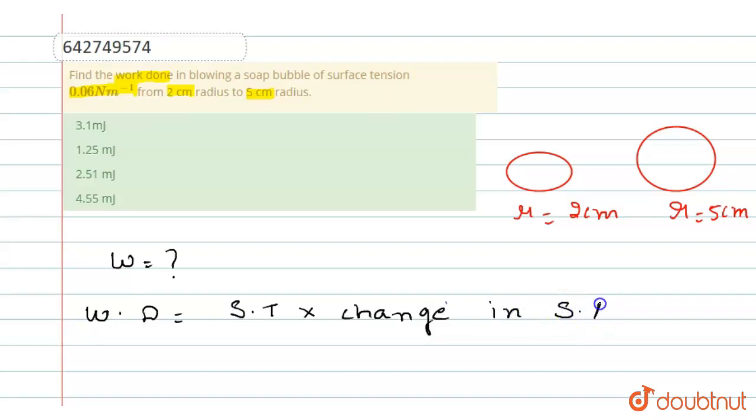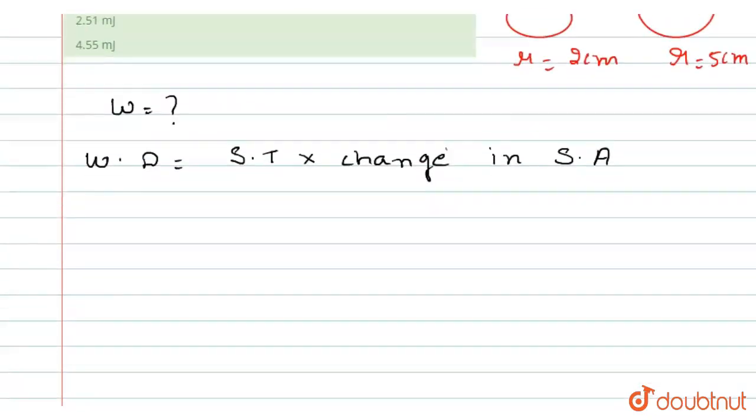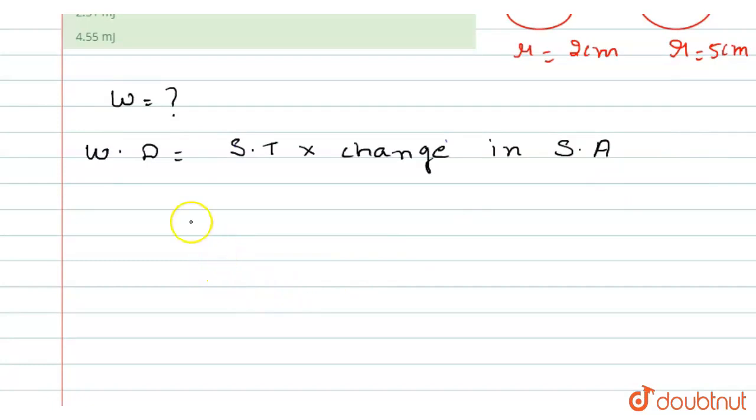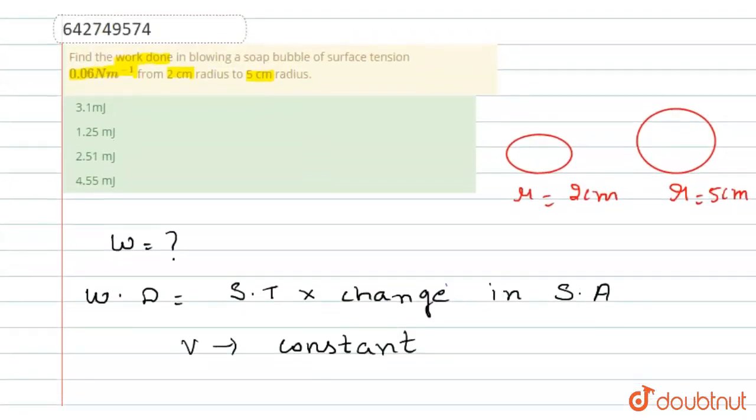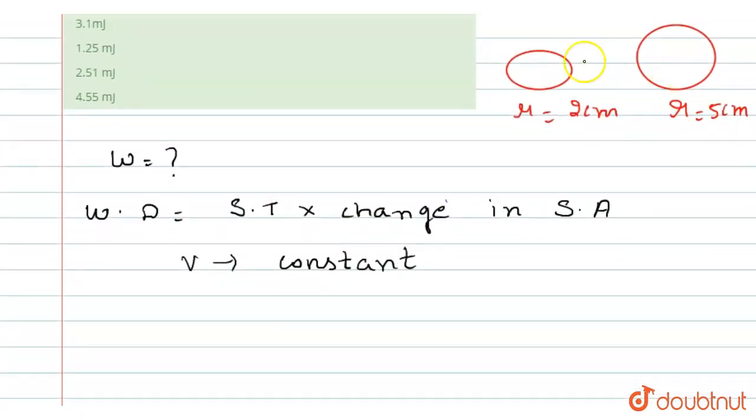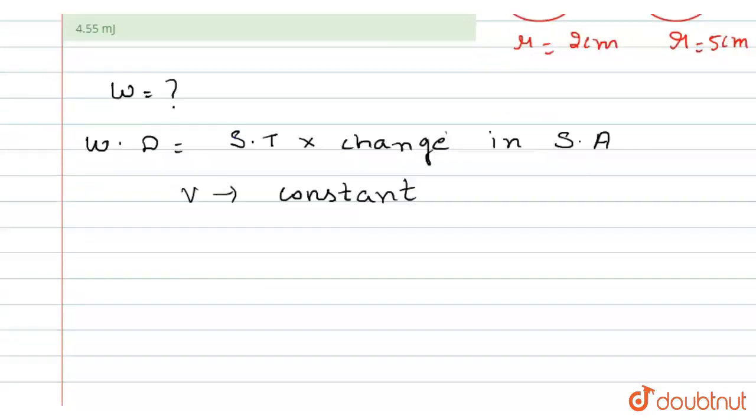In this question volume should be constant because volume can neither be created nor be destroyed. So in this case first of all we have to find the n number of soap bubbles, because n number of soap bubbles should be combined to form a big bubble.